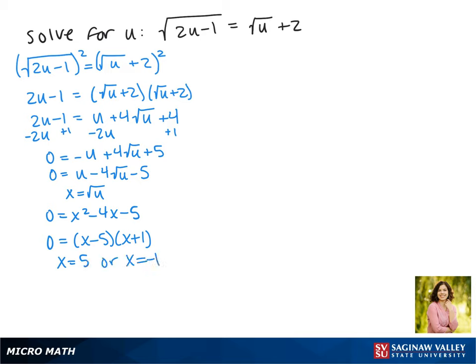But remember we said x is equal to the square root of u, so we're going to go ahead and plug that back in. And to solve for u, which is our original variable, that's what we want to know, we have to square both sides, so we get u equals 25, and we get u equals 1.